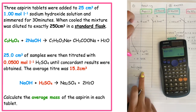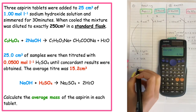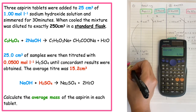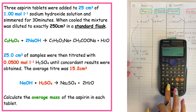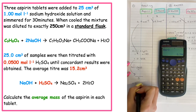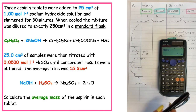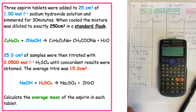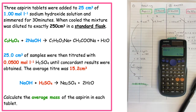The question asks for the average mass per tablet, so we substitute 0.882 grams into the final equation and divide by 3. This tells us that the average mass of aspirin per tablet is 0.294 grams.